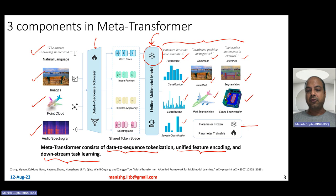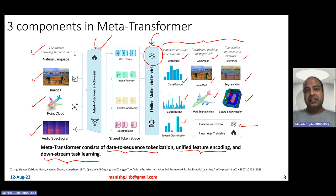The parameters of the encoder model are all frozen, while the parameters of the data-to-sequence tokenizer are trainable. This means the total number of trainable parameters is very small — just the embedding parameters, since the transformer parameters are frozen.